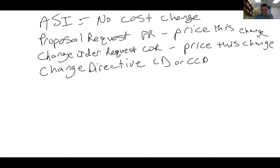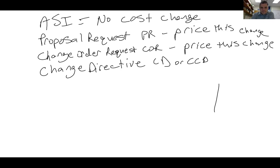Those are different ways that change orders are initiated on projects. Usually they come through the architect by direction of the owner, or from the architect if they've missed something. Sometimes a change order can come from an RFI — your subcontractor or you as a general contractor might look at something and say we're missing some information, send an RFI, and get back information from the architect saying a change order is needed.